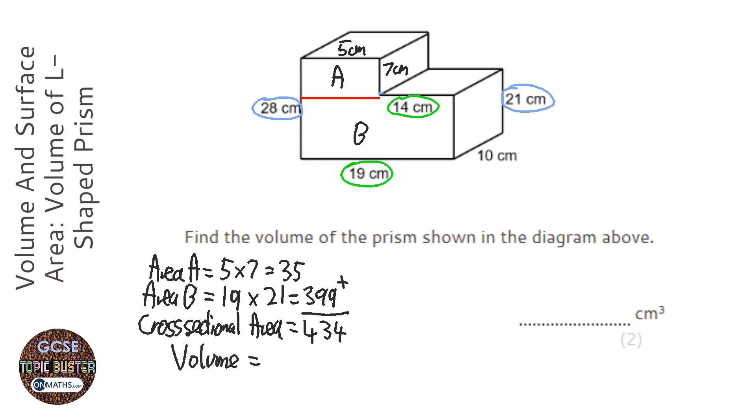is the cross-sectional area, which is 434, times how 3D it is - this length here - so times it by 10. That's going to be 4340 centimeters cubed.